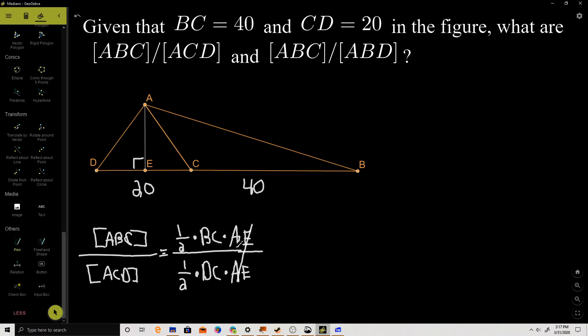We can immediately start canceling some stuff out. AE over AE cancels out, and one-half over one-half cancels out. So this ratio actually just becomes the length of BC over the length of DC. Now I can just plug in some numbers. BC has a length of 40 and DC has a length of 20. Whenever your numbers end in zeros, you can just cross them out in the fraction.